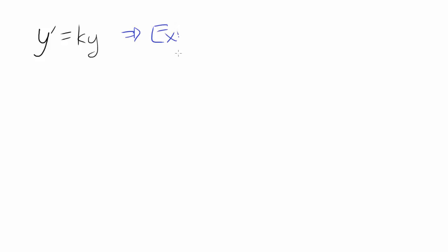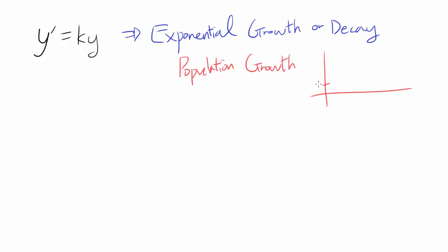This applies whenever you have exponential growth or decay. Let me give you some examples. You can have population growth, where the population is doubling every second. At zero seconds, the population is one. At one second, the population becomes two. At two seconds, the population becomes four. At three seconds, it's eight, and so on. In this case, you have exponential growth.